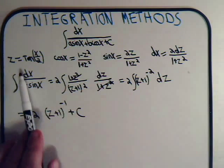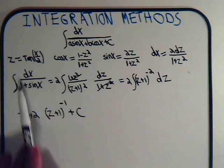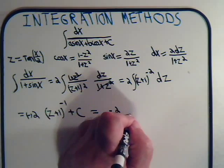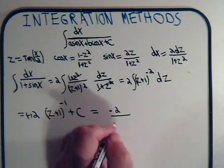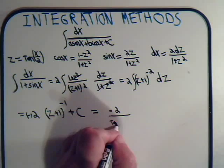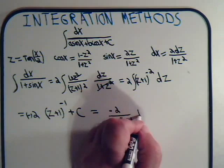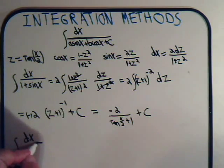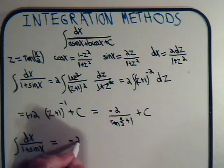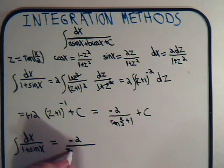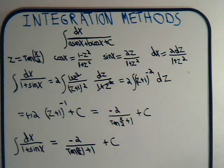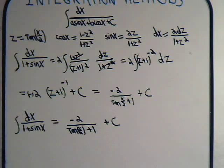But this is supposed to be the solution to our original integral, which we can obtain as soon as we back-substitute z equals tangent of x over 2. So this would equal minus 2 divided by the tangent of x over 2 plus 1, plus an arbitrary constant. So the integral of dx over 1 plus sine of x, which before we would have had no way of solving, equals minus 2 divided by tangent of x over 2 plus 1, plus an arbitrary constant.